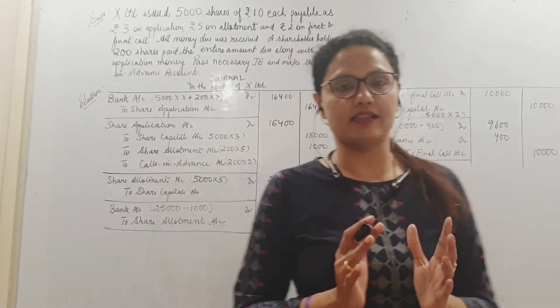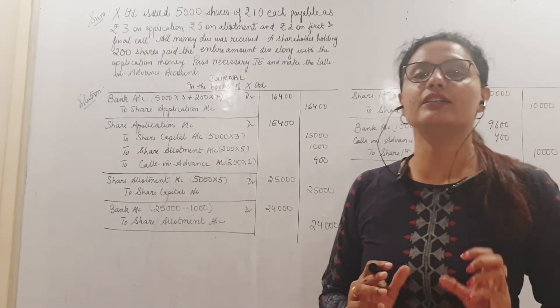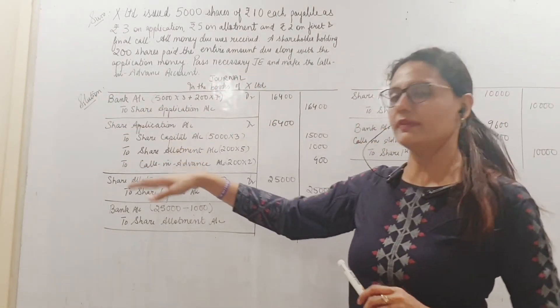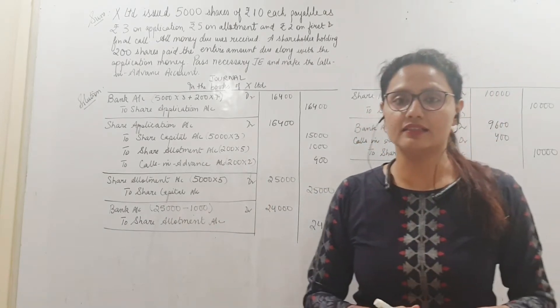So at the time of application, how much did I receive? Not 15,000, but 16,400 including the advance. So here you have to be very careful when you have advance. The money has already come. It came early. At allotment and share call time, this money will not come again.